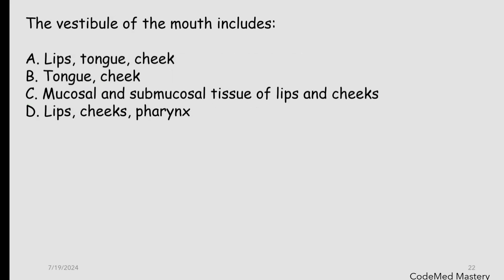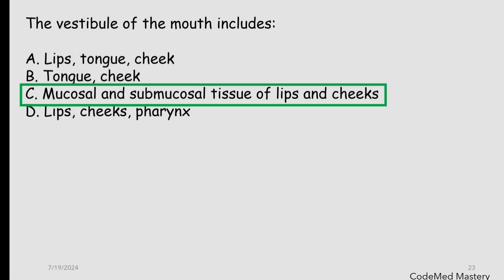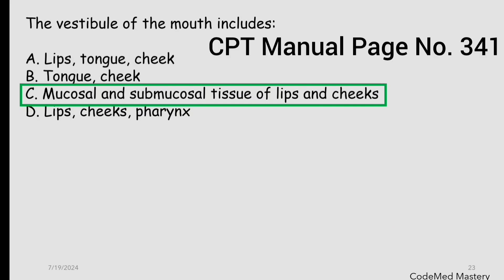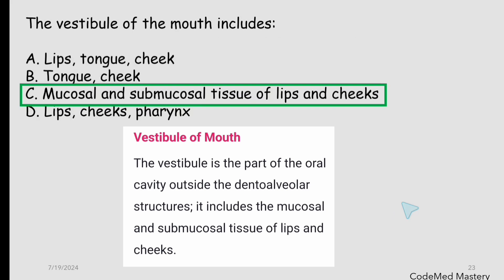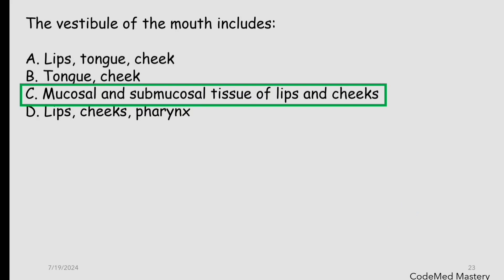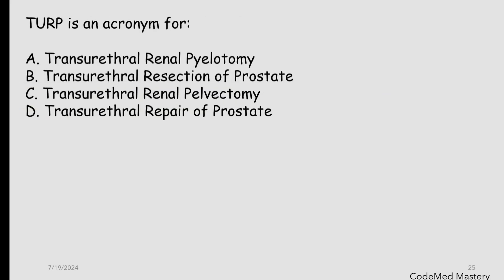Next question: the vestibule of the mouth includes — option A: lips, tongue, and cheek; option B: tongue and cheek; option C: mucosal and submucosal tissue of the lips and cheeks; option D: lips, cheeks, and pharynx. The right answer is option C. You will find this answer by reading the subsection guidelines for vestibule of mouth at the beginning of the digestive system. The vestibule is a part of the oral cavity outside the dento-alveolar structures, and includes mucosal and submucosal tissue of lips and cheeks.